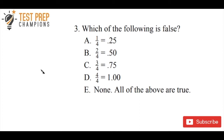One way you can always check this is to use a calculator: put in 1 divided by 4, press equals; 2 divided by 4, press equals; 3 divided by 4, hit equals; 4 divided by 4, hit equals. That will tell you if the fractions are equivalent to the decimals. Anytime you have a fraction — whatever it is, like 5/8ths — you can always convert it to a decimal just by dividing the top number by the bottom number in your calculator.